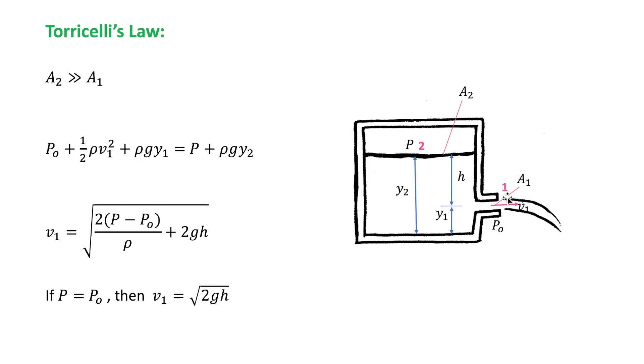So, when the liquid's height is H above the hole. Because A2, this area, is much larger than A1, the liquid is approximately at rest at the top of the tank. It's here, it's approximately at rest.